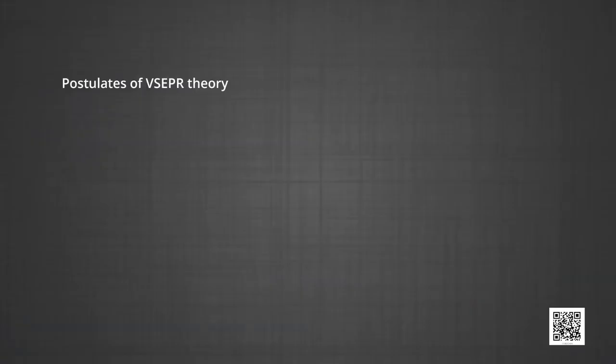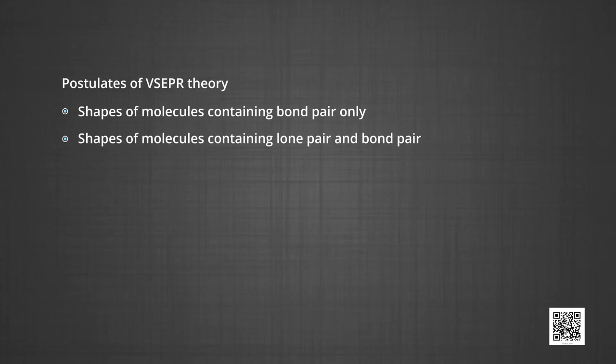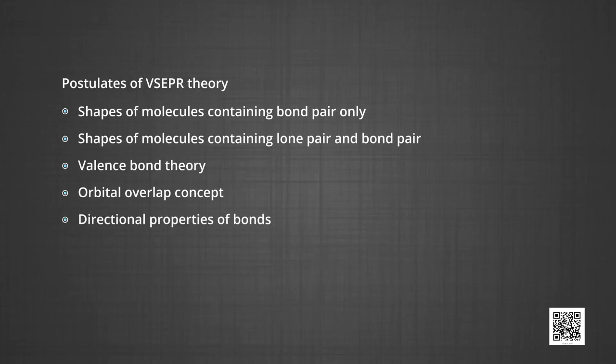Hello dear students, welcome to the Massive Open Online Course on SWAM in Chemistry. I am Preeti Kiran, PGT Chemistry from Kendriya Vidyalaya Number One, Air Force Station Hindon. In the previous module of chemical bonding and molecular structure, Unit 4 of Class 11th, I discussed formation of different types of bonds, lattice enthalpy, bond parameters, postulates of VSEPR theory, and shapes of molecules containing bond pairs only, as well as shapes of molecules containing lone pair and bond pair.